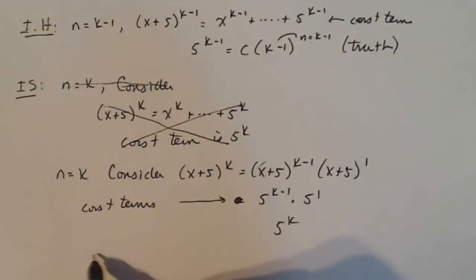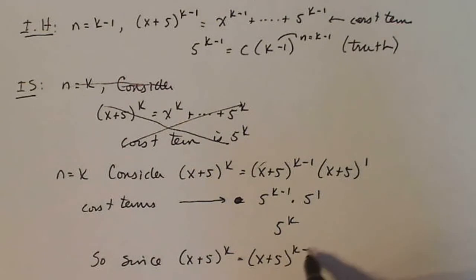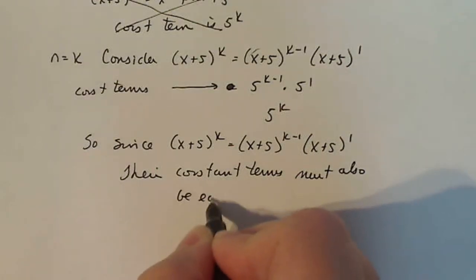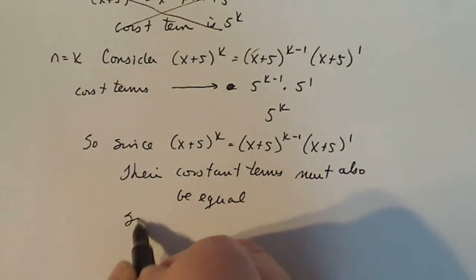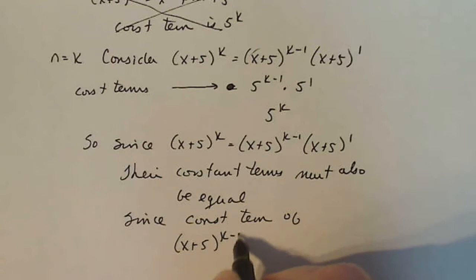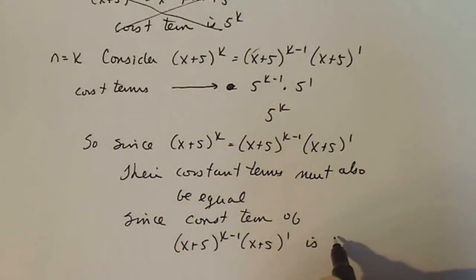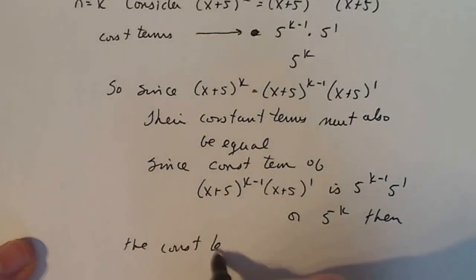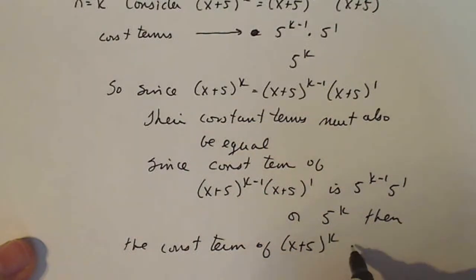So if these two things are equal, or since (x+5)^k equals (x+5)^(k-1) times (x+5)^1, their constant terms must also be equal. So since the constant term of (x+5)^(k-1) times (x+5)^1 is 5^(k-1) times 5^1, or 5^k, then the constant term of (x+5)^k is 5^k.